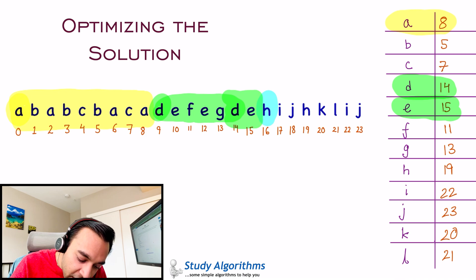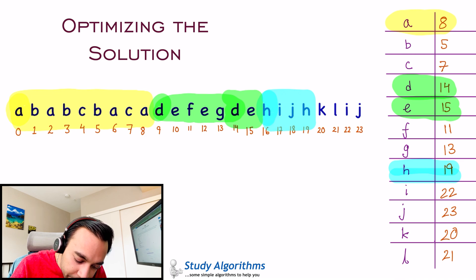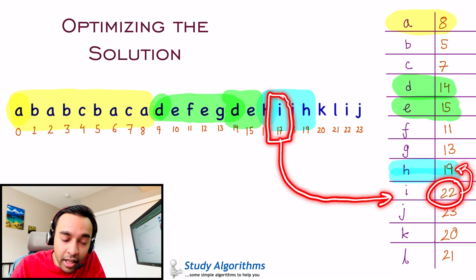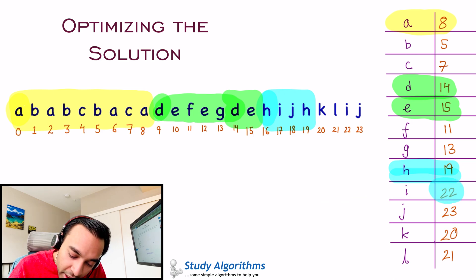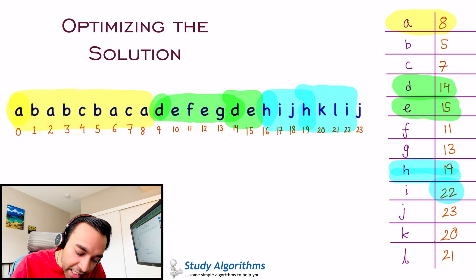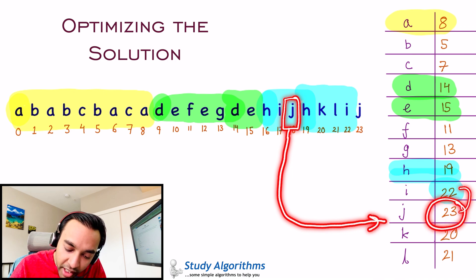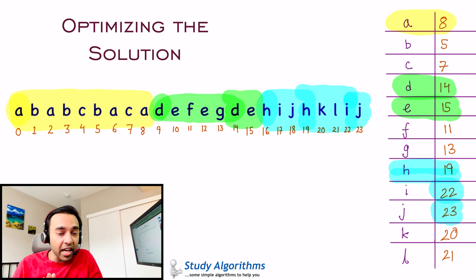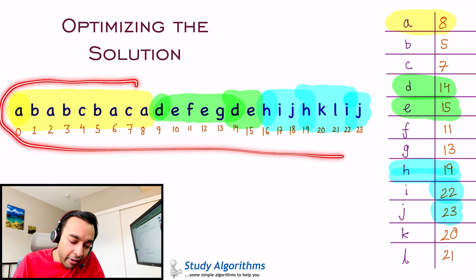Start the third partition with H — last occurrence is 19. Moving ahead, check I — last occurrence is 22, which is greater than 19, so update the partition end to 22. Next, check J — last occurrence is 23, which is greater than 22, so update the partition end to 23. You have now reached the end of the string, and we have found all three partitions.